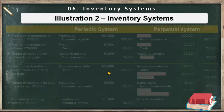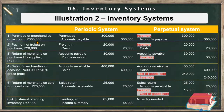Here is an illustration for the periodic and perpetual system. We have transactions and journal entries. For number one — purchase of merchandise on account for 300,000 — that would be debit to purchases and credit accounts payable 300,000 under periodic. If it is a perpetual system, instead of using purchases, you're going to use the inventory account. So that's the only difference.